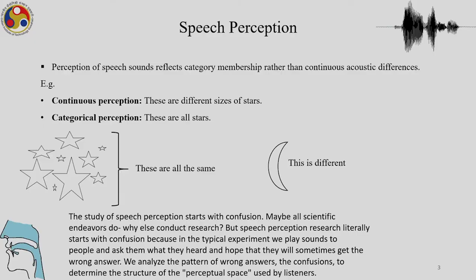Hello and welcome to this NPTEL MOOCs course on phonetics and phonology — a broad overview. We are continuing with speech perception. As we already know from the last few classes, perception of speech sounds reflects category membership rather than continuous acoustic differences. We learned about acoustic phonetic invariance and invariant cues that help us understand human speech. Continuous perception versus categorical perception can be illustrated with stars: various sizes of stars represent continuous differences, while the moon represents a categorical difference.